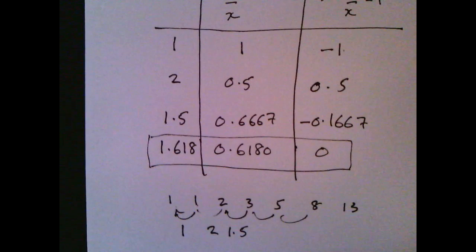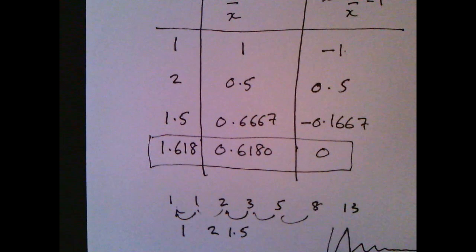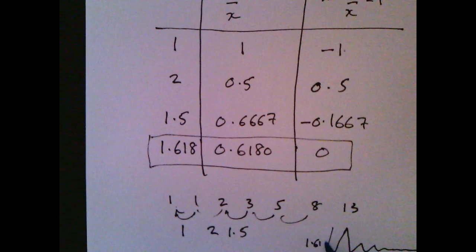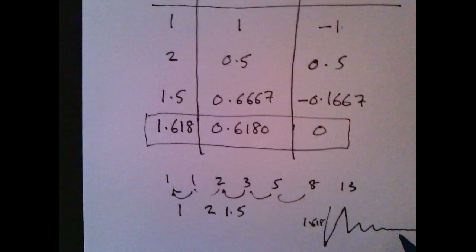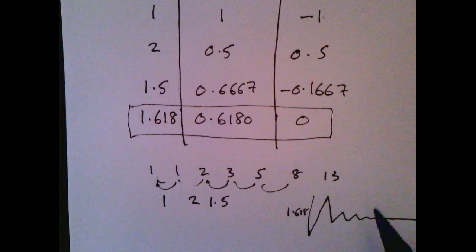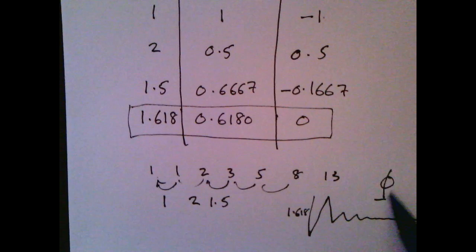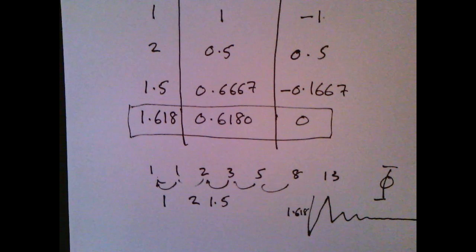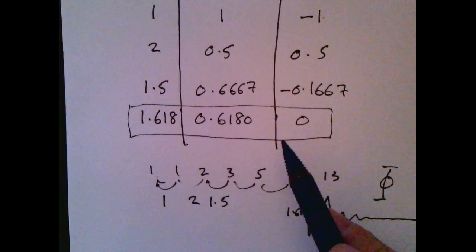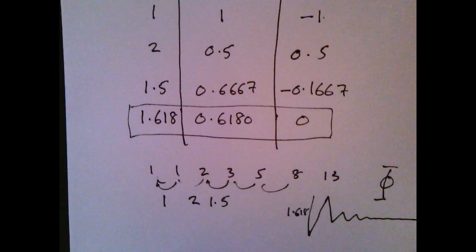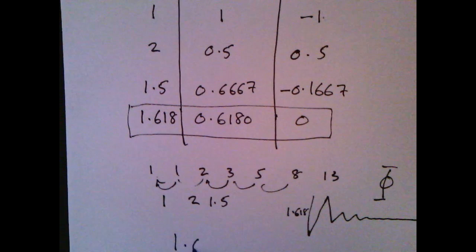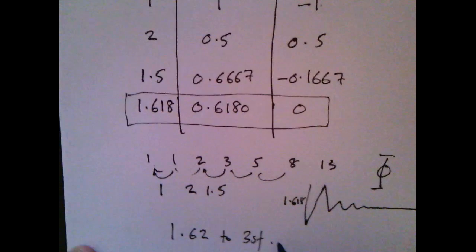You get a graph that goes like that and levels off at a value of one point six one eight roughly, which is Phi, a mysterious number. Okay, that's the quick solution to that. And to give it to three significant figures as it's asked for is one point six two, three significant figures.